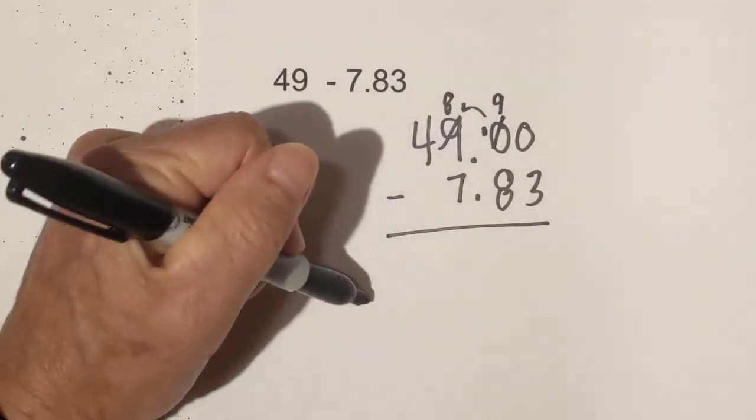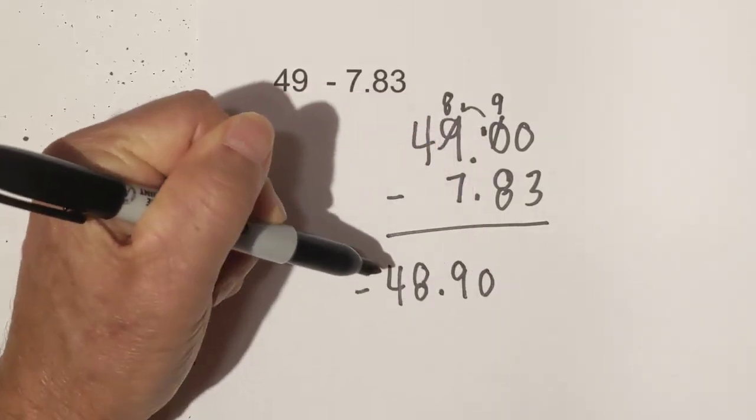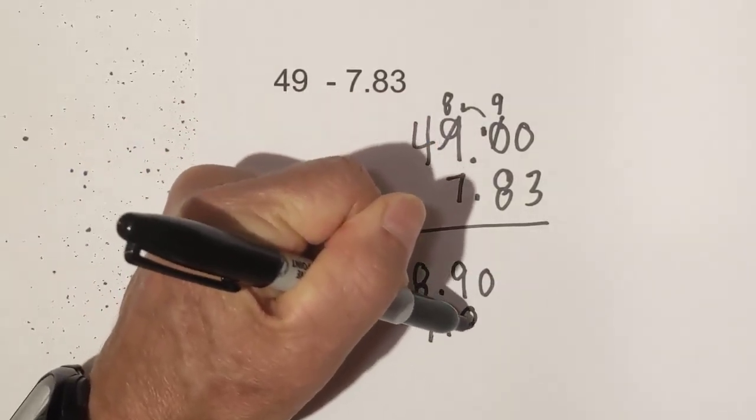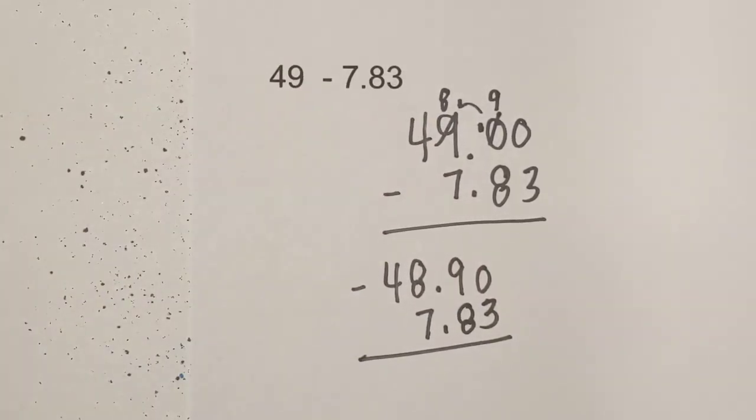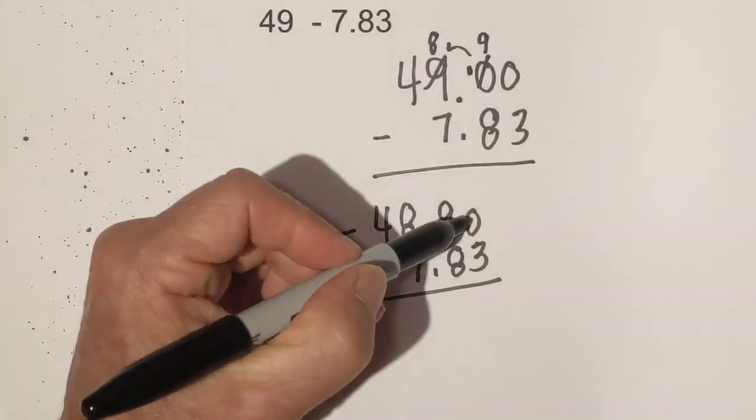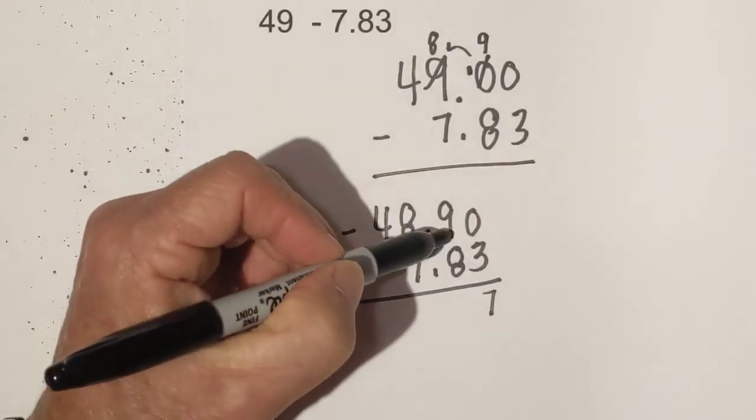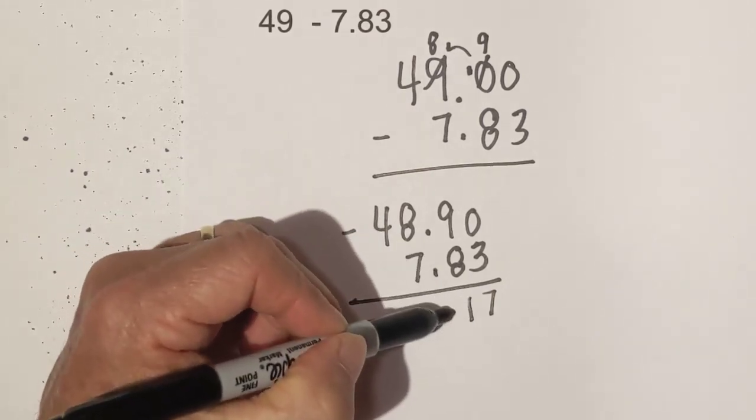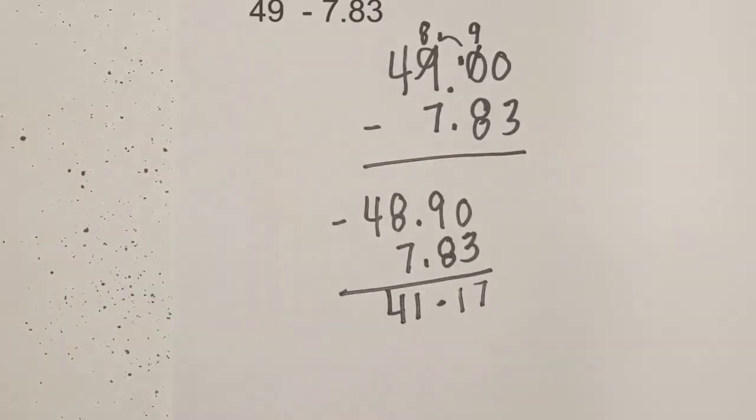I'm going to rewrite this. We have 48.9 and 7.83. Now we subtract. Remember it borrowed, so ten minus three is seven. Bring down the decimal point. Nine minus eight is one, and eight minus seven is one. So we have 41.17. I hope that helps. Thanks for watching, and remember, kindness multiplies kindness.